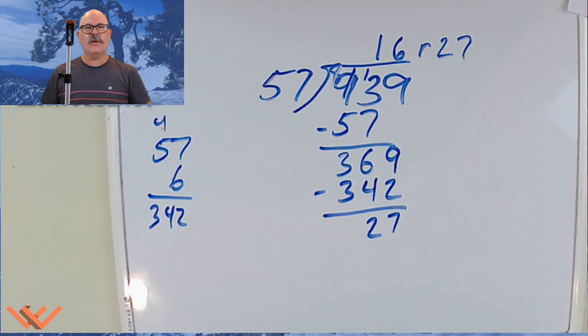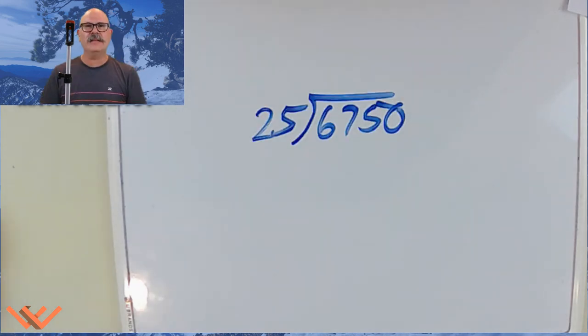Then we can say 16 remainder 27. There you go. Let's try one more double digit divisor problem. Okay. Let's take a look at this problem. It's a double digit divisor and then I have a 4 digit dividend. Again, the process is the same. Let's get started.